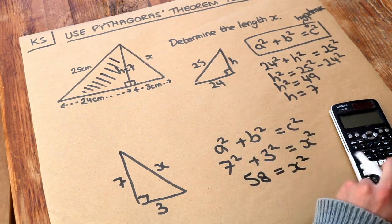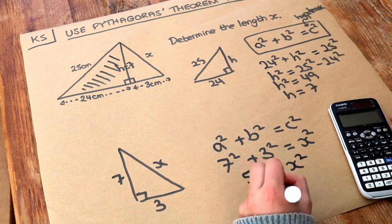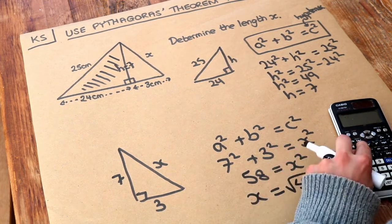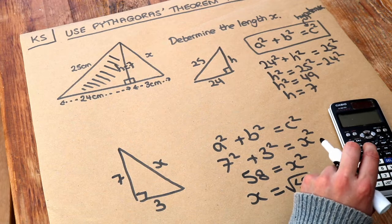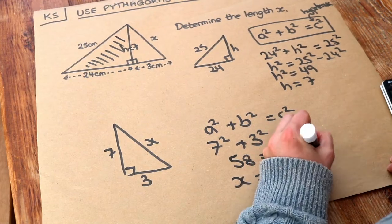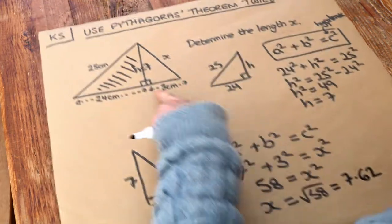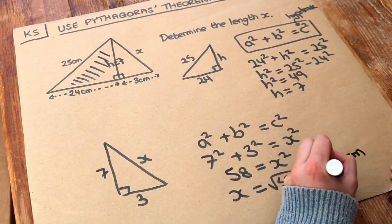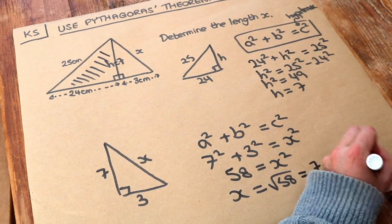And then to undo that squared, we just square root both sides, so x is the square root of 58. And if we press the SD key, we get 7.62, and it was in centimetres, and that is to three significant figures. So that's the final answer.